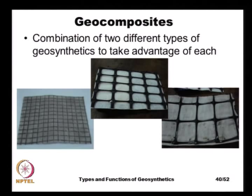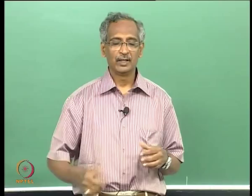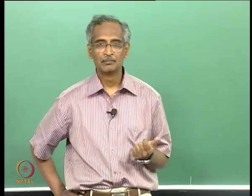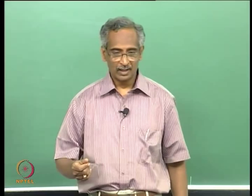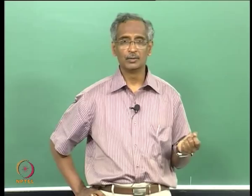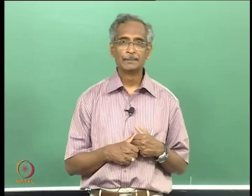Another type of geosynthetic is the geocomposite, of which there are several varieties. The prefabricated vertical drain is an example of a geocomposite — using a geotextile as an outer filter with an inner core of geonet or corrugated plastic sheet. Other examples are combinations of geotextile and geogrid, which take advantage of the specific properties of both: geotextiles provide excellent separation and filter properties, while geogrids provide excellent strength and stiffness.